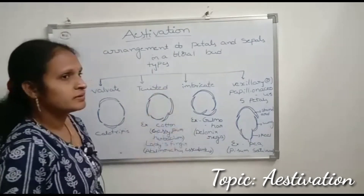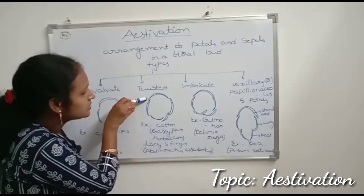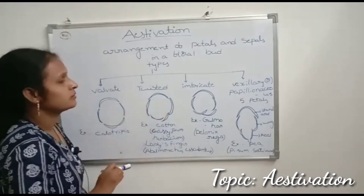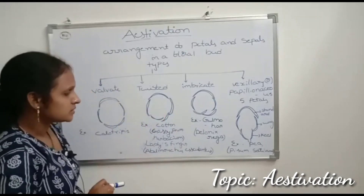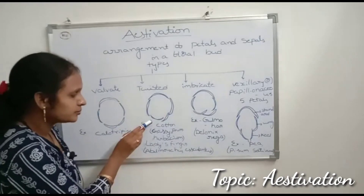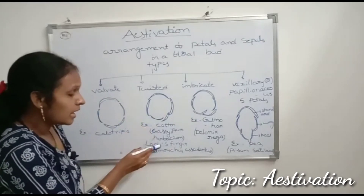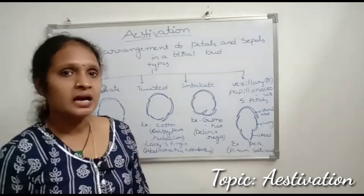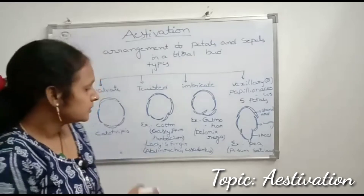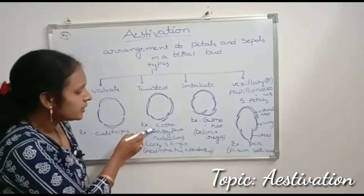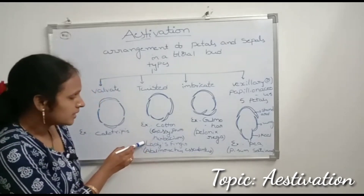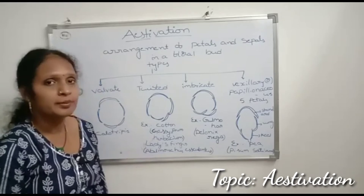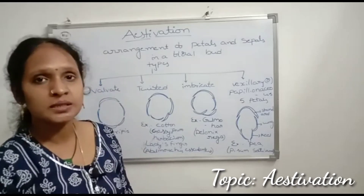Twisted estivation means their margins overlap the next one. Examples are cotton and lady's finger. The scientific name of cotton is Gossypium herbaceum, and the scientific name of lady's finger is Abelmoschus esculentus.